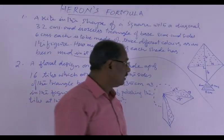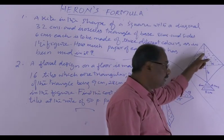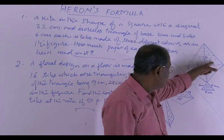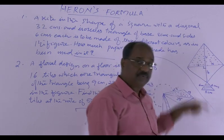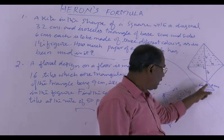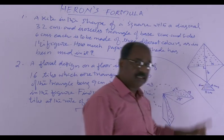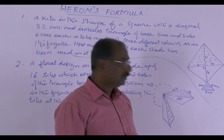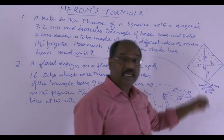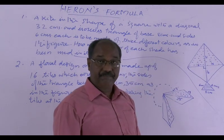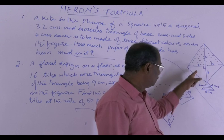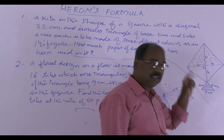A kite in the form of a square and an isosceles triangle. So, there are three colours — one colour, the second colour, third colour.